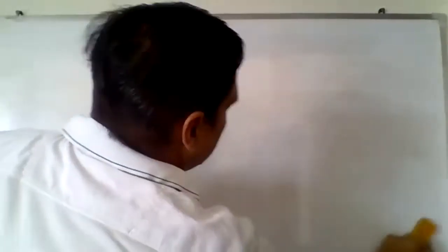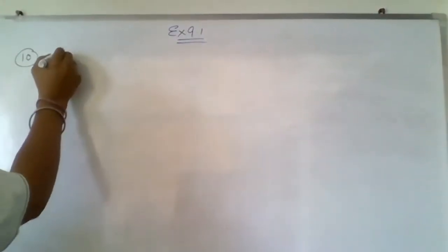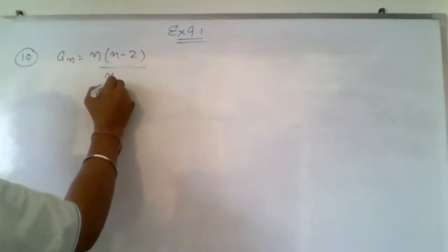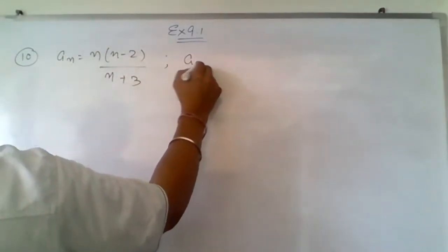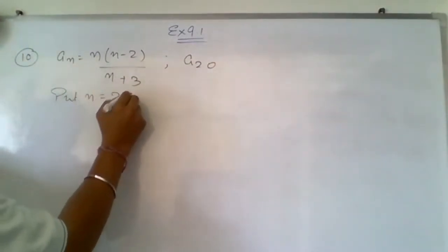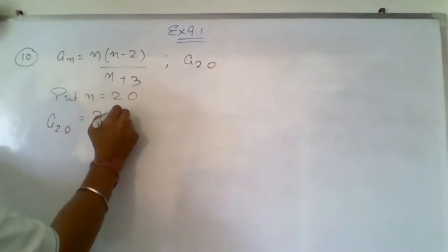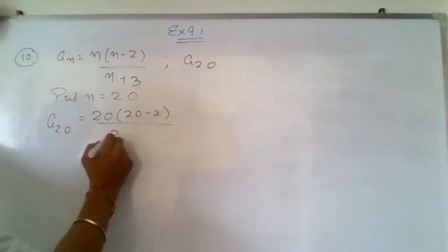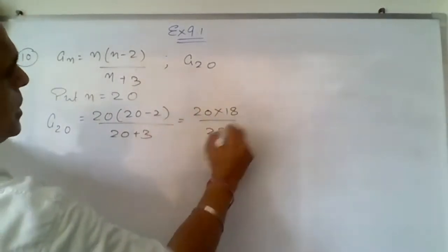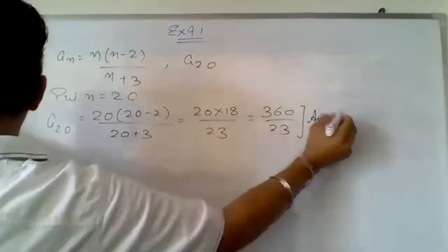For question 10, a_n = n(n − 2)/(n + 3) and we need to find a_20. Put n = 20: a_20 = 20 × 18 / 23 = 360/23. This will be your answer for this question.